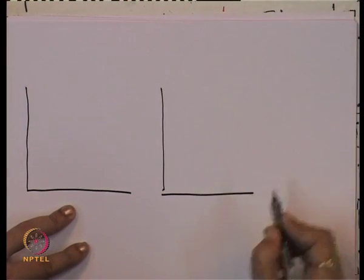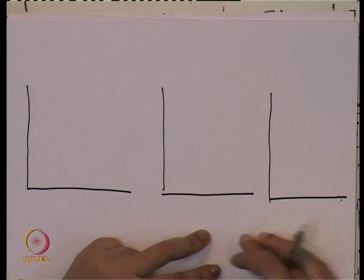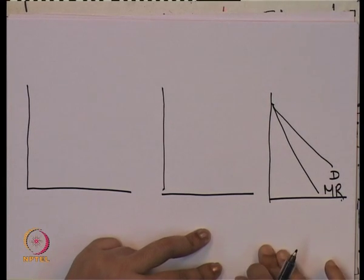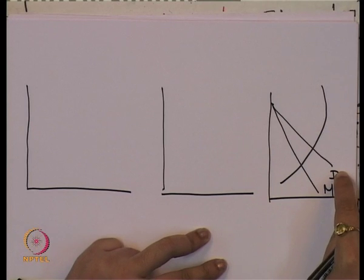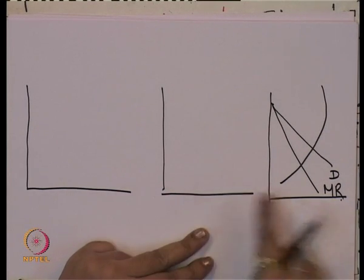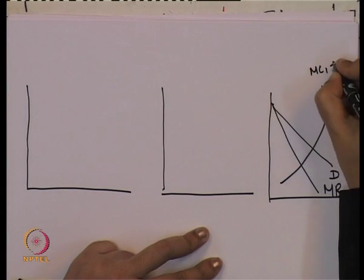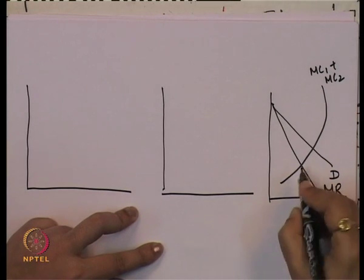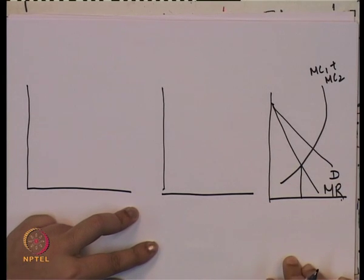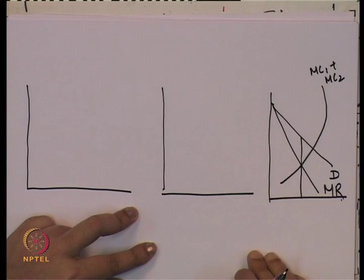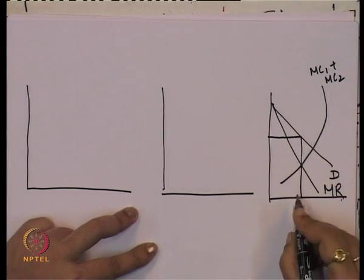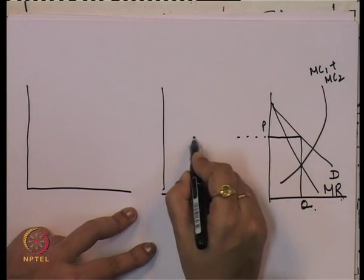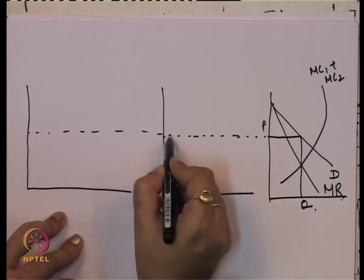We will take the case of a duopoly to keep it simple. The demand curve and marginal revenue curve shown are for the entire market — the marginal revenue curve is the summation of the marginal revenue curves of all firms. The marginal cost function is the summation of MC1 and MC2. The price is determined at the point where marginal cost equals marginal revenue, giving equilibrium output Q and equilibrium price P. The same price P is followed by both firms.